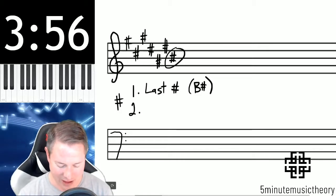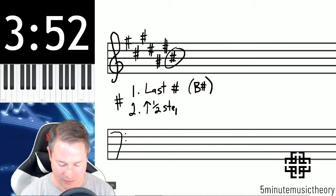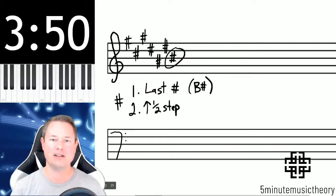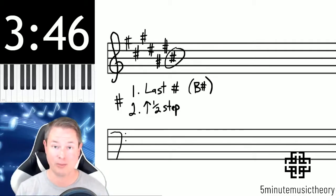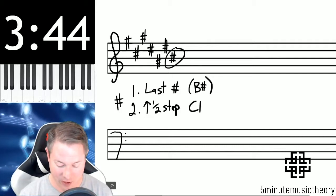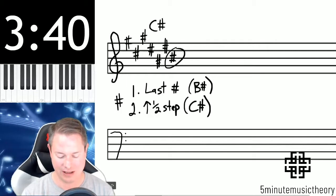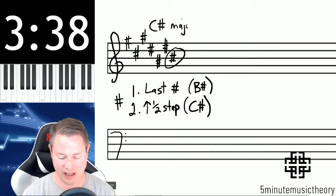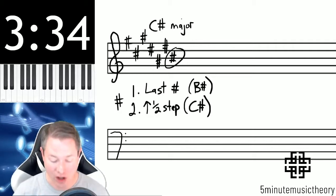Then we take that B sharp onto step two, and we go up a half step from B sharp. You can compare it to the piano keyboard. Find a B sharp, go up a half step, and you end up with a C sharp. Therefore, the key, the major key associated with this key signature that has seven sharps is C sharp major.